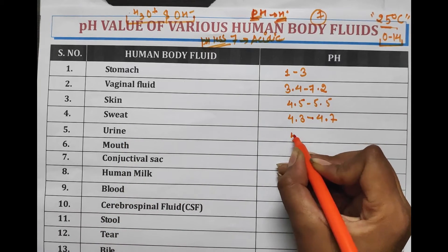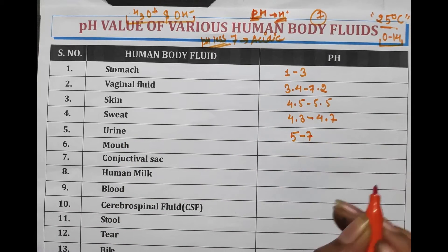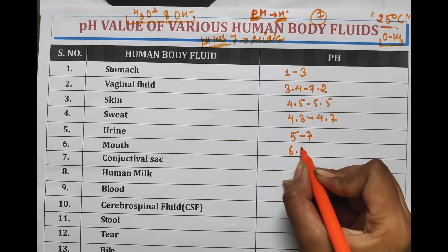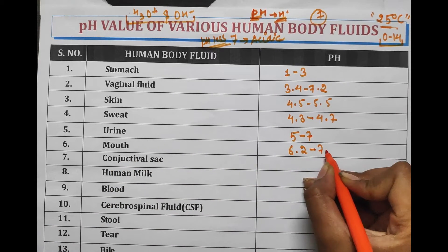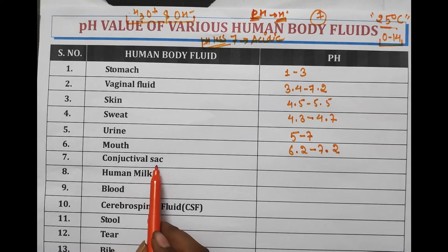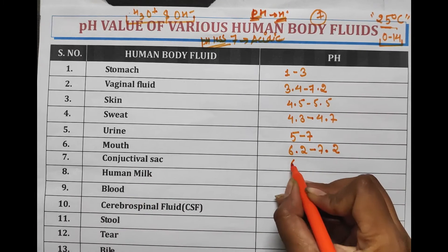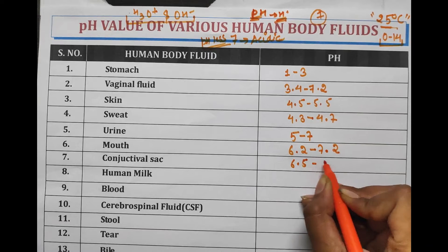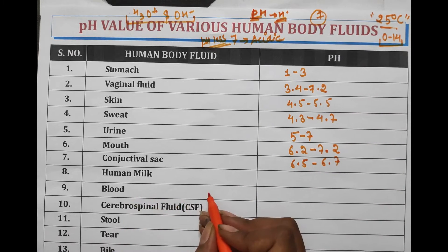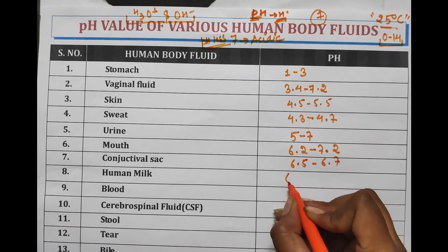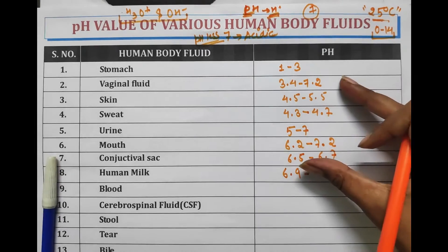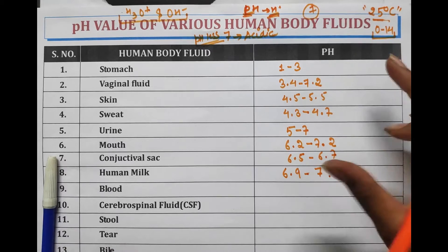Urine has a pH of 5 to 7. Mouth has a pH range from 6.2 to 7.2. Conjunctival sac has a pH range from 6.5 to 6.7. Human milk is almost near neutral, with a pH of 6.9 to 7. These were the acidic organs.